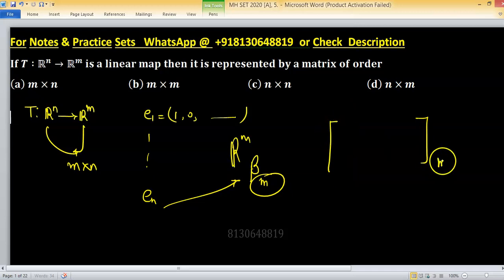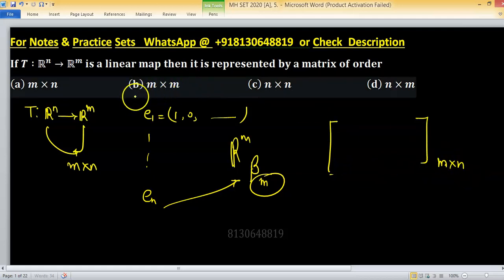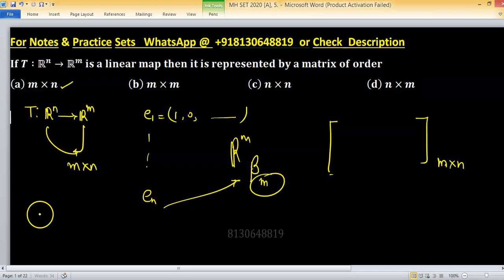So m will be the number of rows and n will be the number of columns that's why size of the matrix is m cross n, m cross n it means option is right one.